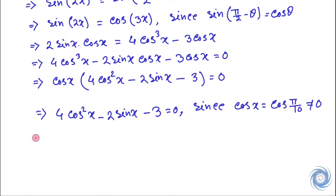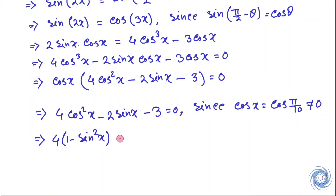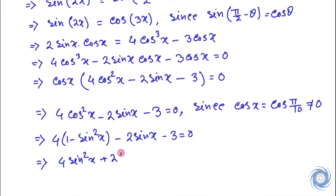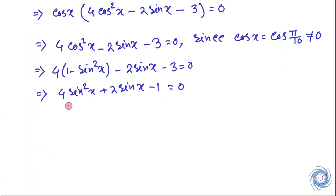Now from here we have. Here we have used the formula that sin squared x plus cos squared x equals 1. Now from here we have. This is a quadratic in sin x. So we have.